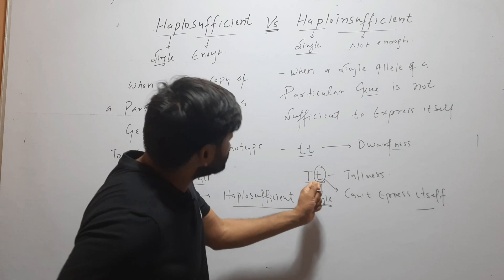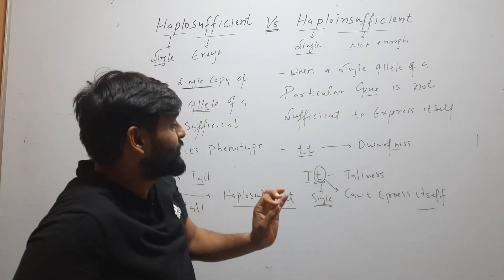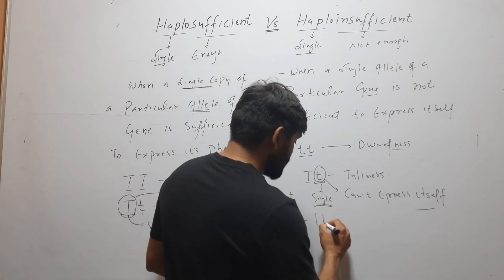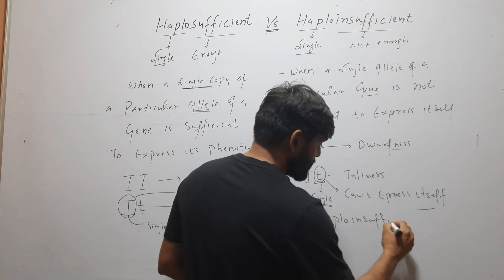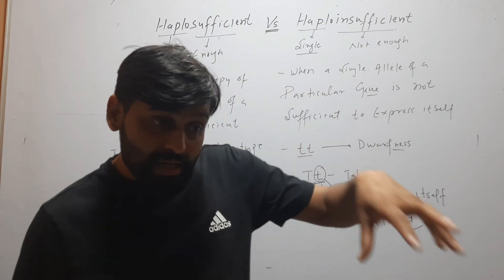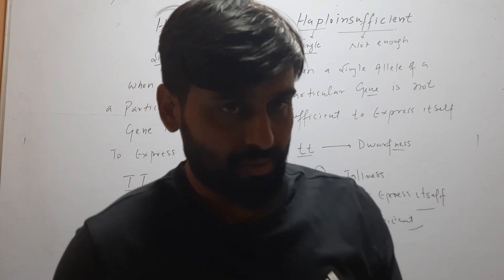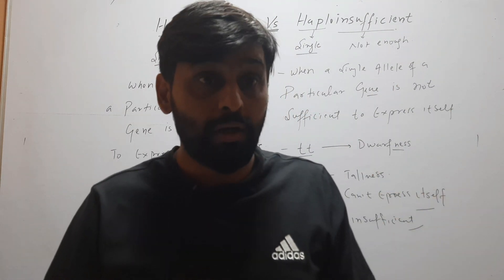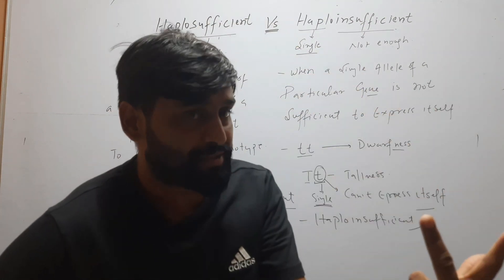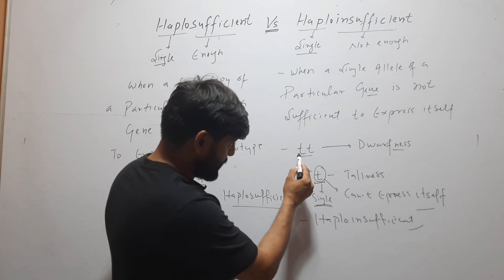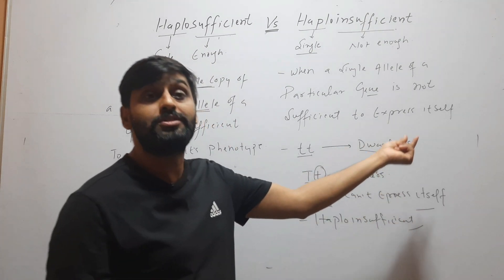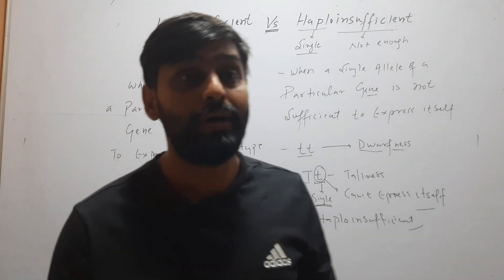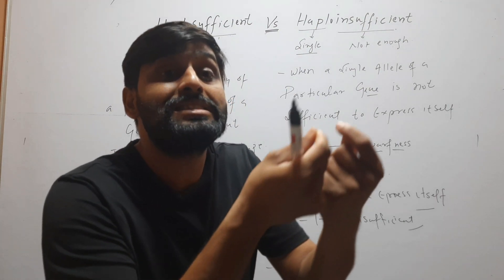So when a single allele of a particular gene is single and is not sufficient to express itself — it will not express itself. When a single copy of any gene is present and it expresses itself, for example capital T, then it will not be called haploinsufficient. But when a single copy is unable to express itself and it expresses itself only when there are two copies — here two copies small t and small t will cause dwarfness — but when one allele is present, capital T and small t, so single allele is present and it is unable to express itself. So it will be called haploinsufficient.